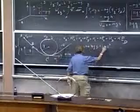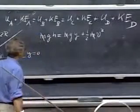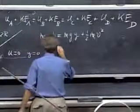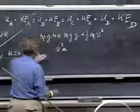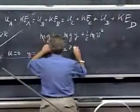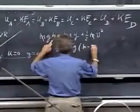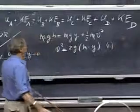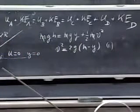I lose my m, and so you find that v squared equals 2g times h minus y. So this should hold for all these points. Therefore, it should also hold for point D.